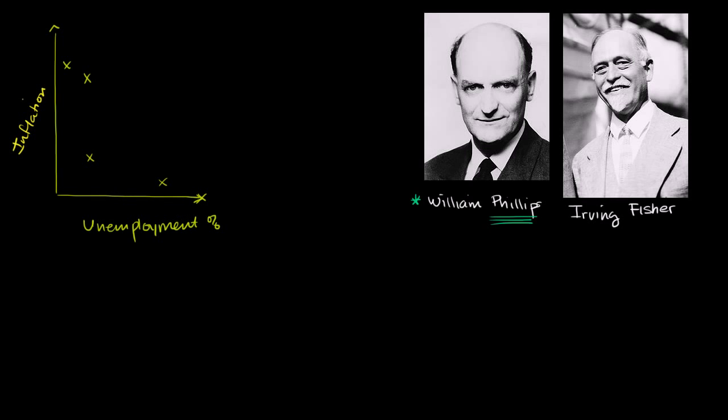You could even have deflation. What he saw is there's a correlation here, an inverse relationship. If you were to try to fit a curve to these points—and you could have more points here, I'm just picking them at random—you could fit a curve that looks something like this. It's generally saying that when you have high inflation, up here you have high inflation and low unemployment.